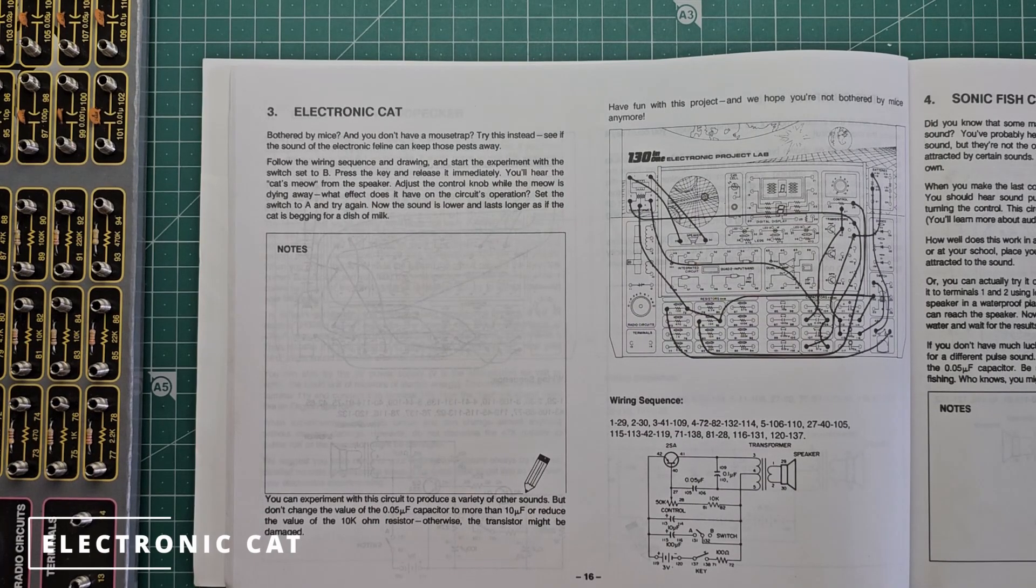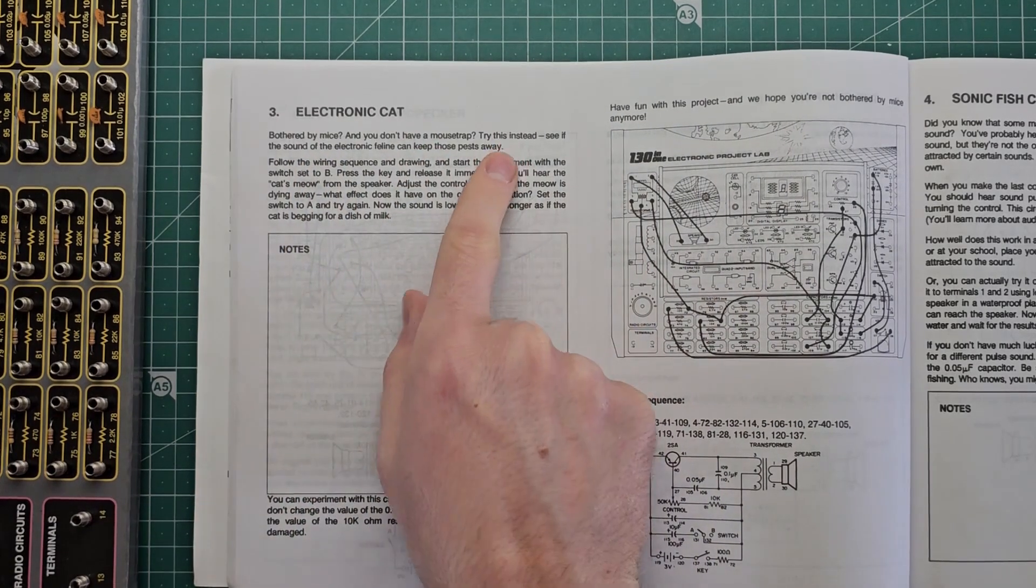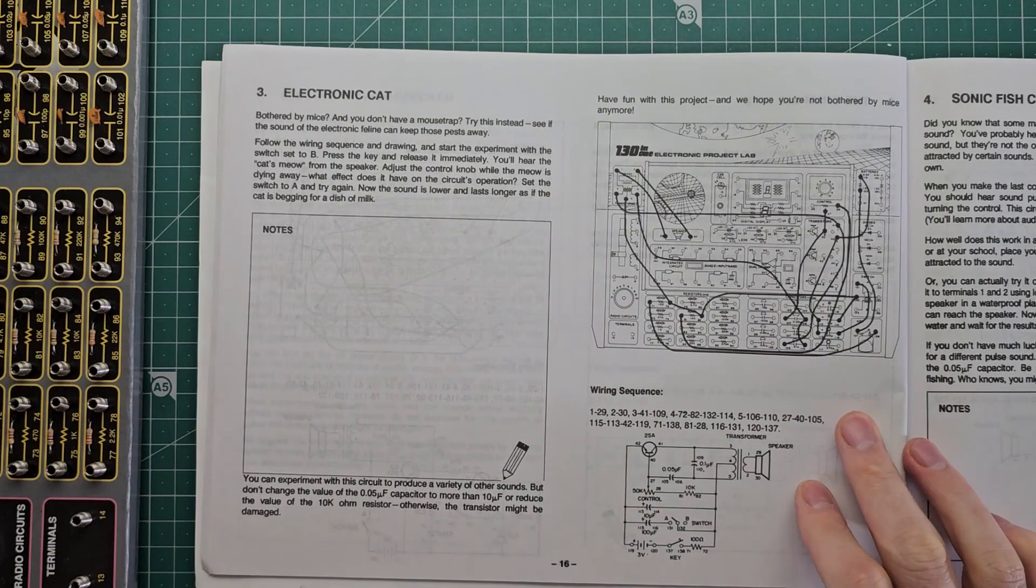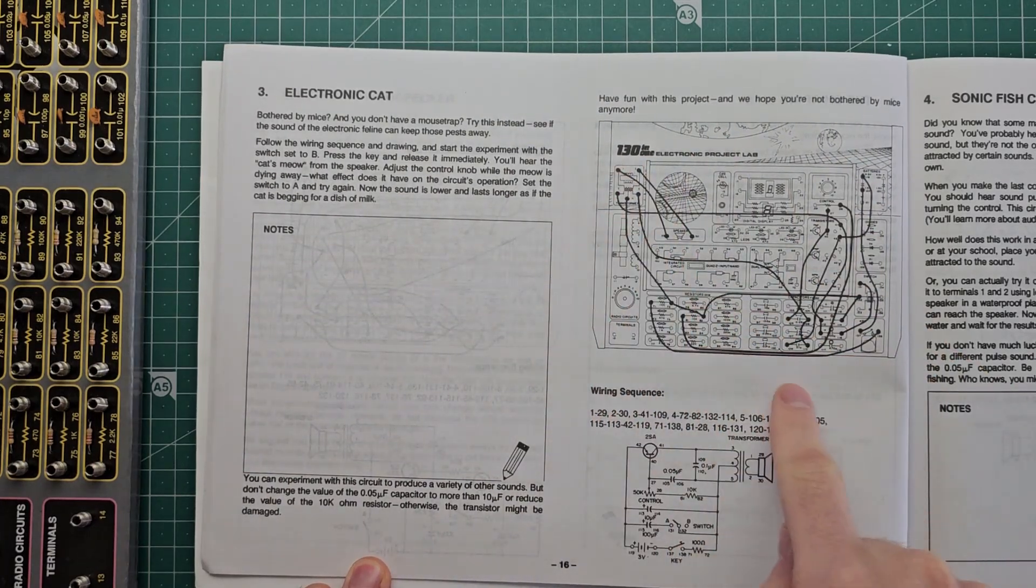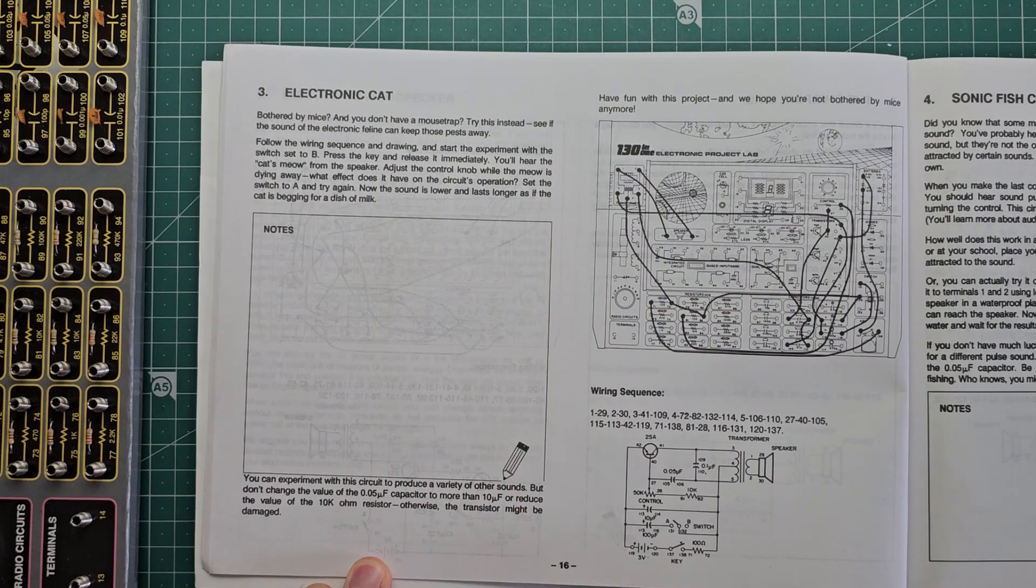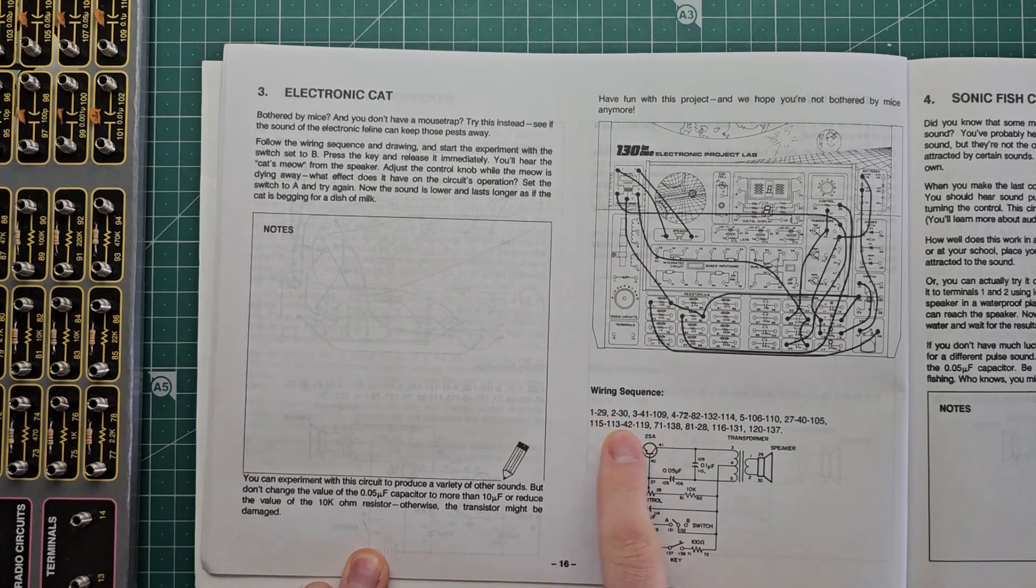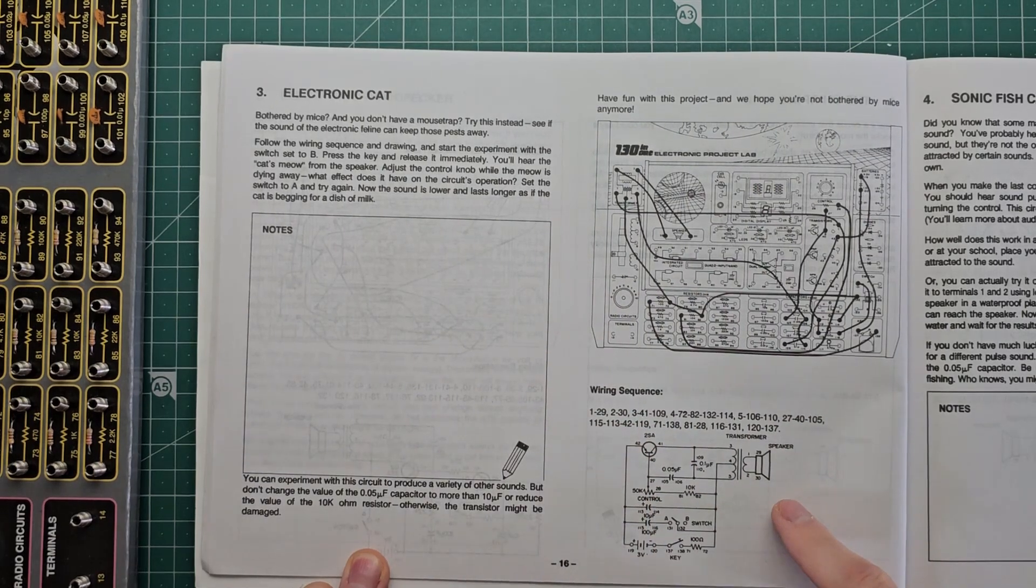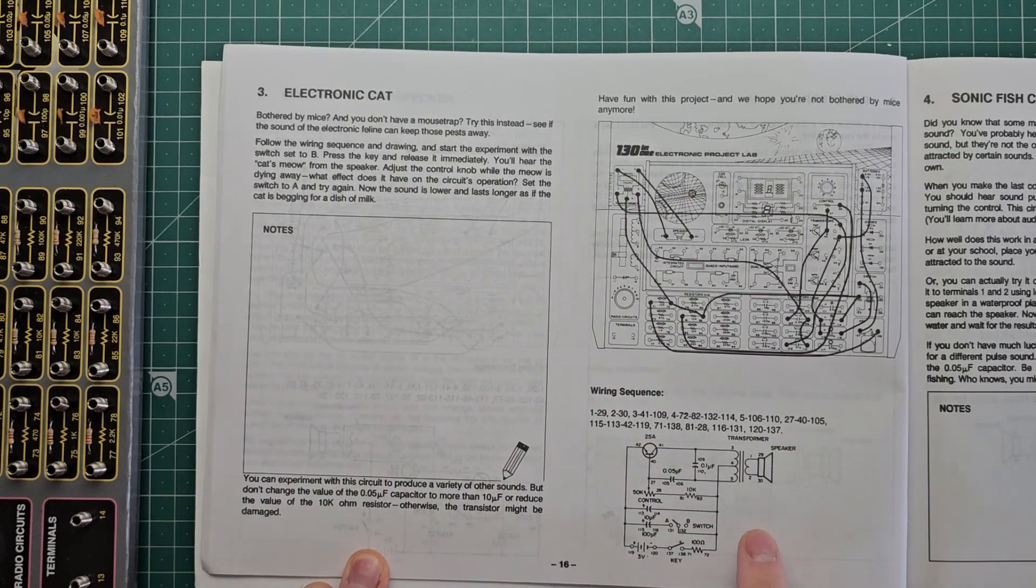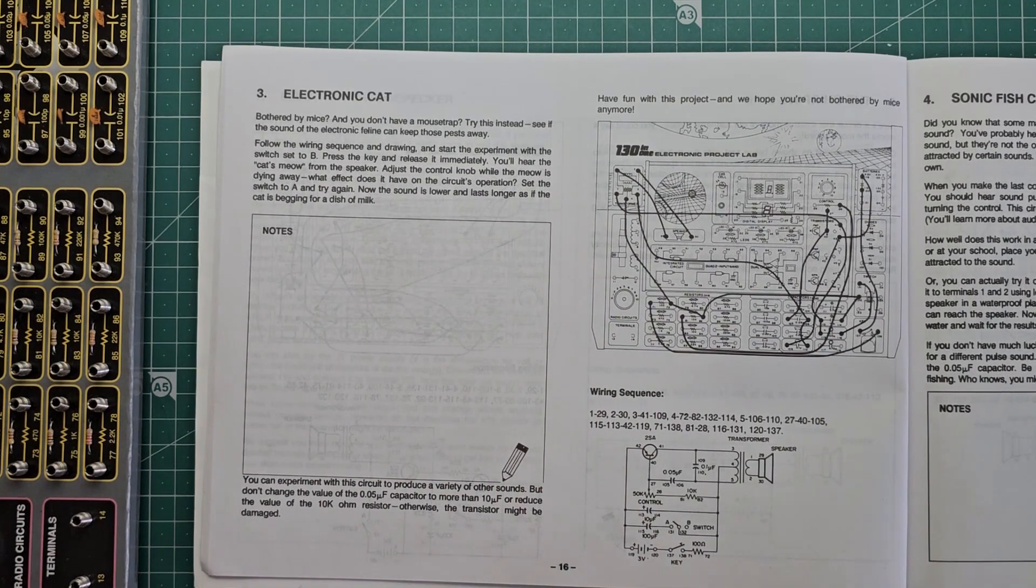For my first trick I'm going to build an electronic cat. You bothered by mice and you don't have a mousetrap? Try this instead. Sure, why not? So here you can see there's an image of the system that we're going to be building with all the wires just bridged between the springs. There's a wiring sequence listed here so you can find the number of each spring and link them together according to this. And there's also a circuit diagram. When I was young I didn't really understand the circuit diagrams but I could follow the wiring sequence. So let's put this together.